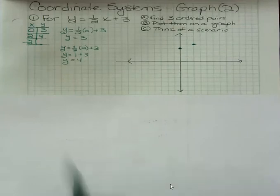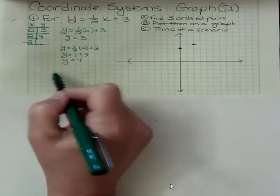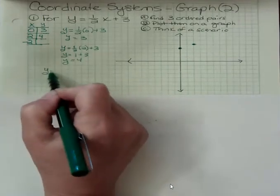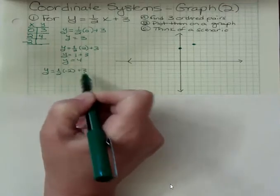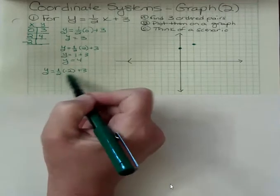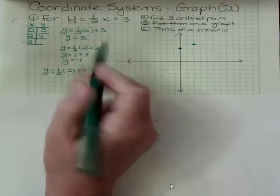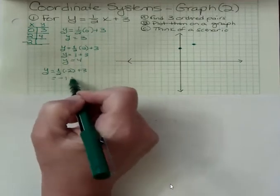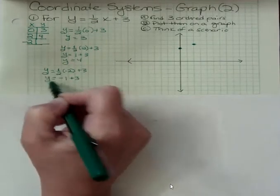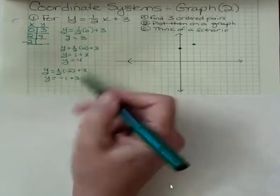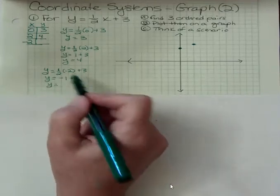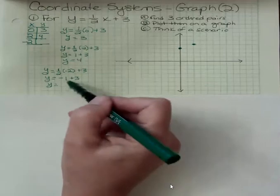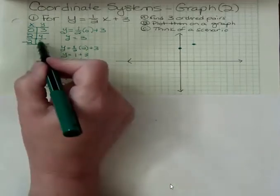What about the third point? My third point that I chose was negative two. One half times negative two plus three. Well, half of two is one, but a negative times a positive is negative, so that's negative one. You can always do that on your calculator. You don't have to do everything in your head. Use your calculator to get past those stumbling blocks that you may have. Negative one and positive three is two, so we get two.